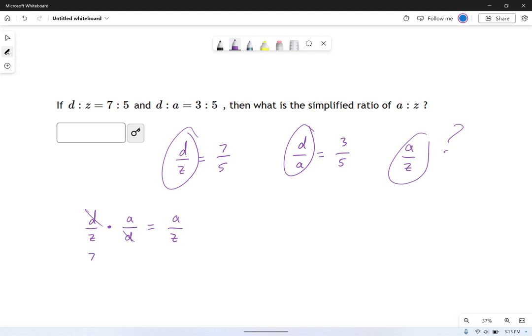Well, we know that d over z is 7 over 5. And we weren't told what a over d is, but we were told d over a, that's just the reciprocal. So this is going to be equal to 5 thirds. Okay, and that's going to be equal to a over z. The 5s happen to cross out in this case. So that means this is 7 thirds, or in other words, a over z.